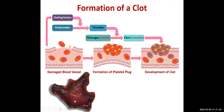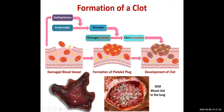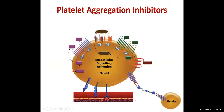Here is a picture of a clot taken out and viewed by electron micrograph — you can see many RBCs entrapped within the fibrin meshwork. These are not real colors — this is a falsely colored electron micrograph; electron micrographs are always grayscale but there is software to color them.